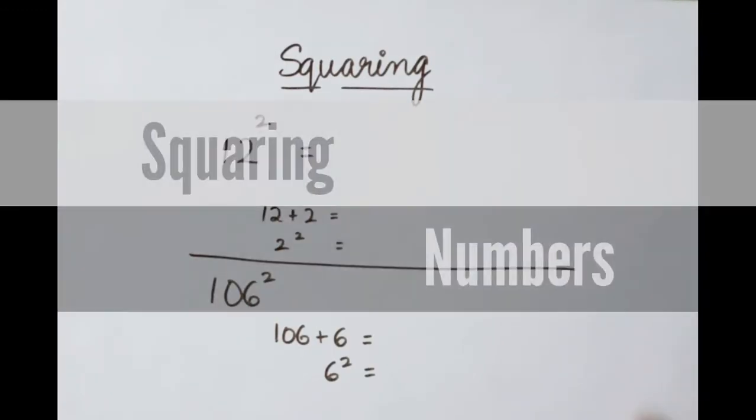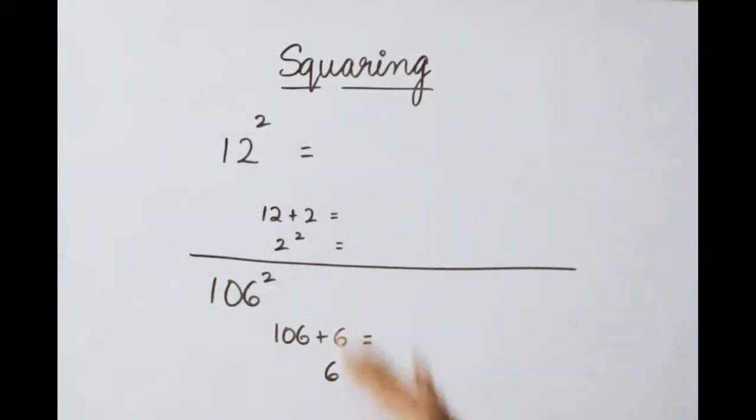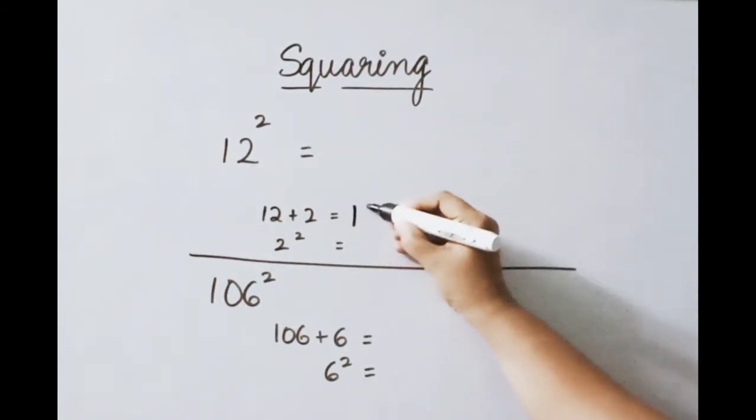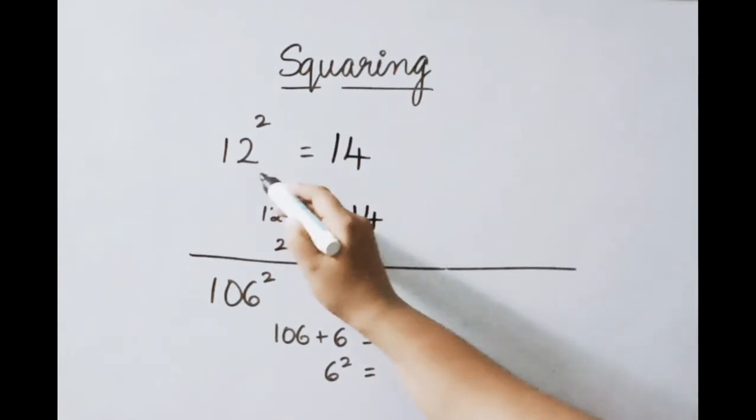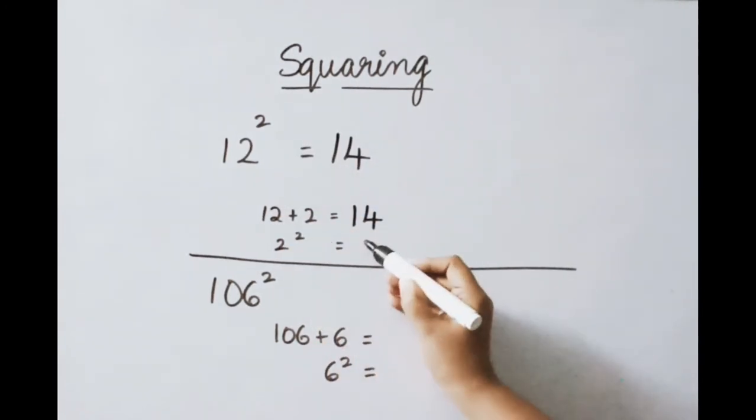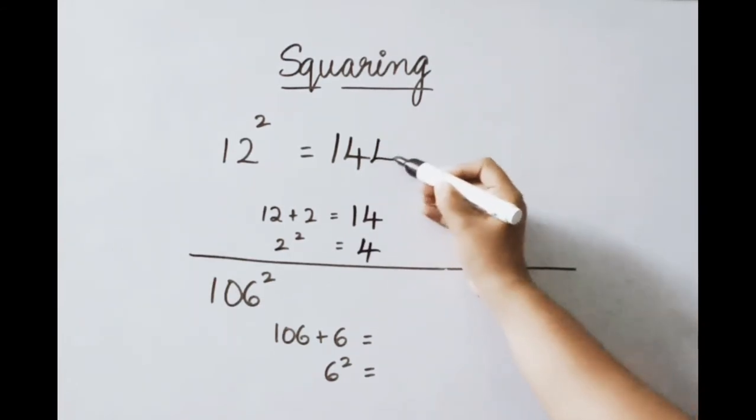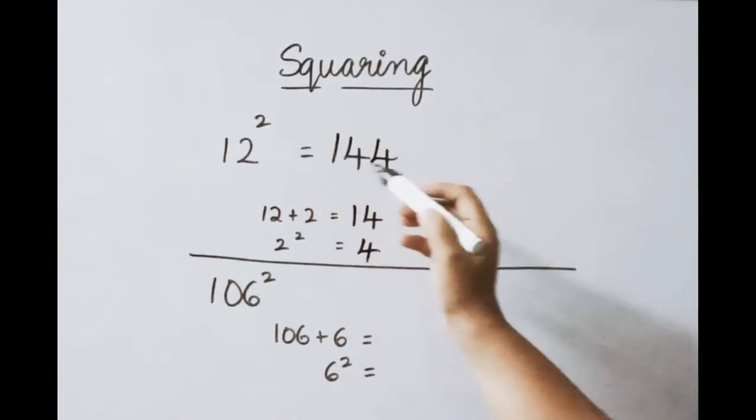Let us see how to find squaring. 12 square. For this one, add the unit place value. 12 plus 2, 14. So first part answer. Next, units place square. 2 square means 4. So write down. So 12 square answer is 144.